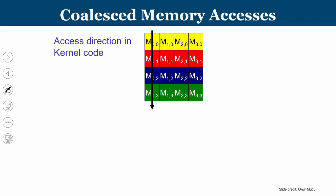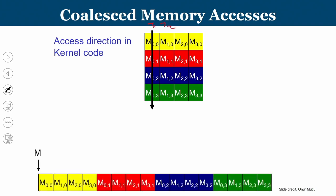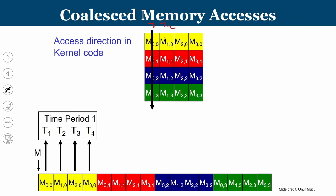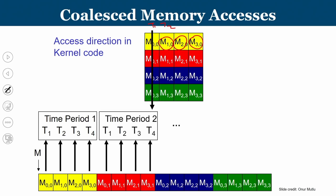In the coalesced access pattern, if the access direction is along rows — T1 works on M0, T2 on M1, T3 on M2, T4 on M3, all within the same cache line — then all 4 threads restrict their access to 1 cache line at a time. Once that cache line is consumed, you bring the next one. In the non-coalesced case, 4 threads required 4 exclusive cache lines; with coalesced access, 4 threads need only 1 cache line — this is the efficiency gain of coalesced memory access.